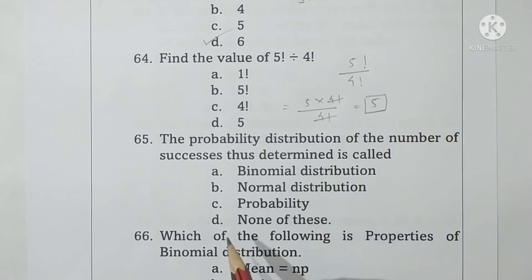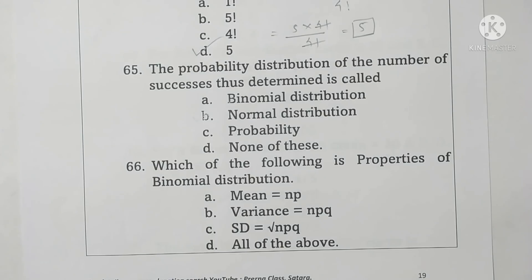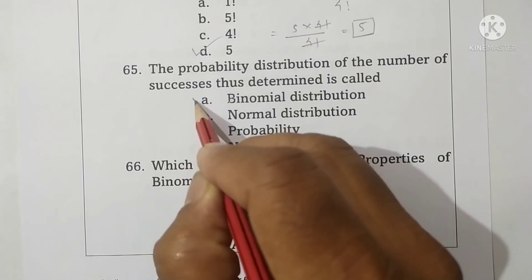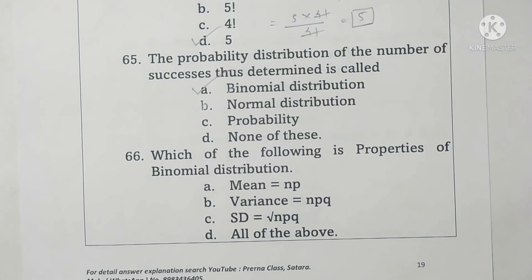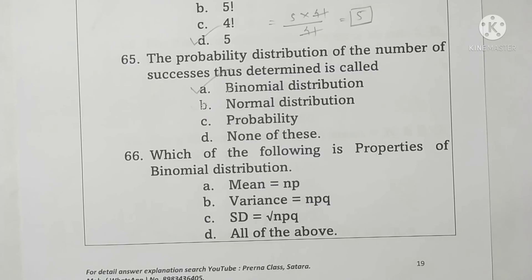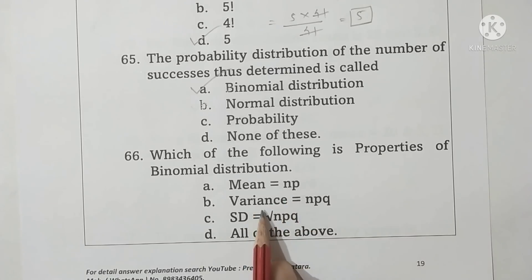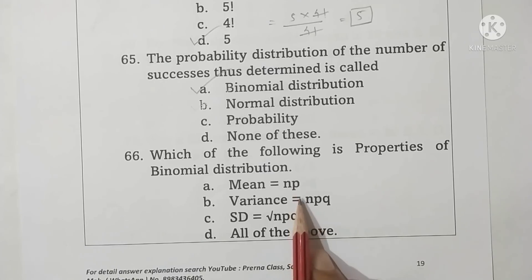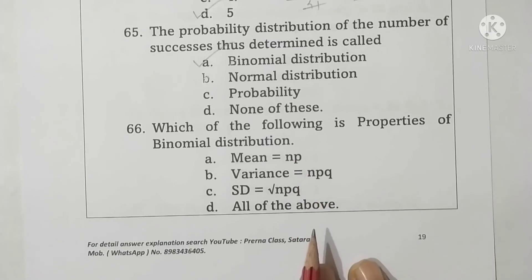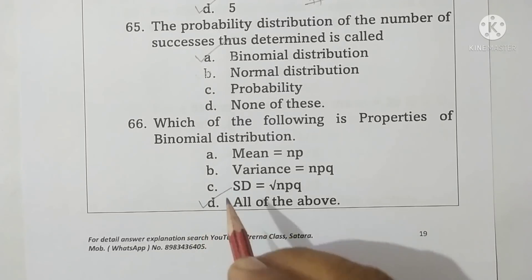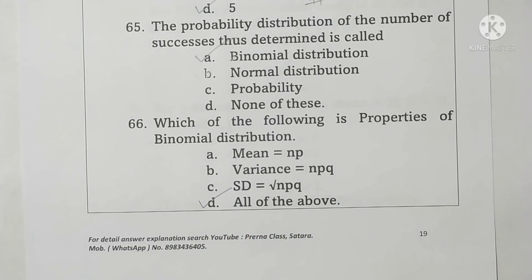The probability distribution of the number of successes thus determined is called a binomial distribution. Option A is correct. Question 66: Properties of a binomial distribution — mean equals np, variance equals npq, and standard deviation equals root of npq. All of the above are correct, so option D is correct. These are the multiple choice questions; remaining questions will continue in the next part.